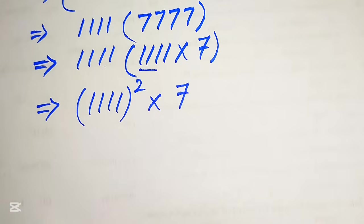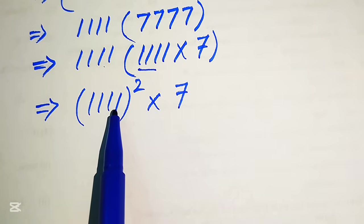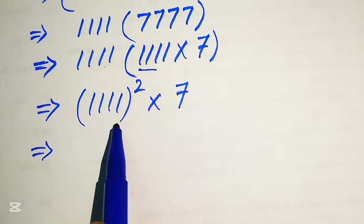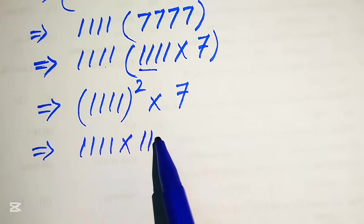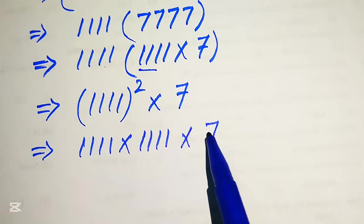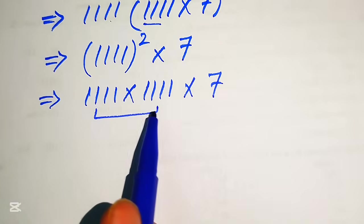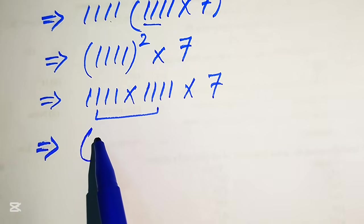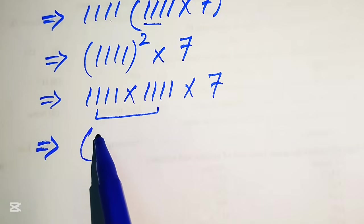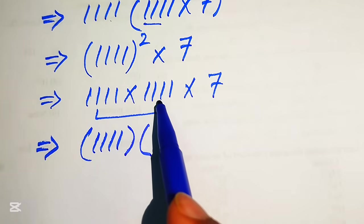Now here in order to write more simplified form of this equation we first need to find the square of this term. The square of 1111 means that we will multiply 1111 by 1111 and here you have this is 7. First we will multiply these two values. In order to multiply these two values first we rewrite this term as, here we have this is 1111 and it is multiplied by this term.